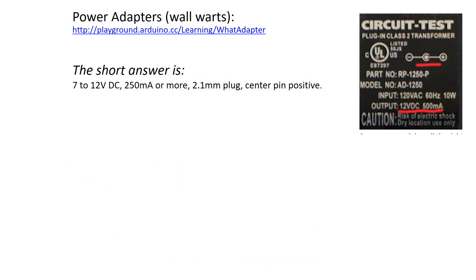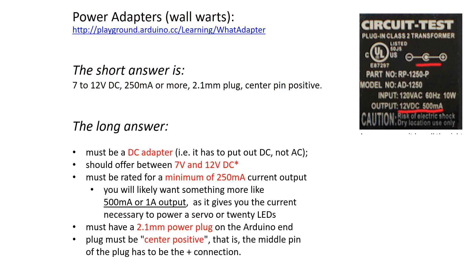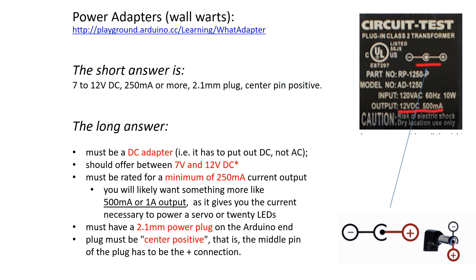With respect to wall warts, a common question is what should you look for when selecting one for your board? The short answer is you want one that provides an output of 7 to 12 volts DC and can source a minimum of 250 milliamps or more. Keep in mind that power supply voltages above 7 volts will offer less current due to the thermal limiting of the voltage regulator. Also make sure that your plug is center positive — most are, but some are reversed, so don't take this for granted.